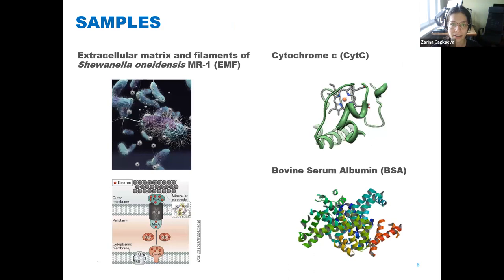So we had three different biological samples. The first one was the extracellular matrix and filaments of the electrogenic bacteria Shewanella oneidensis. Here on the left you can see this bacteria. These threads are the extracellular matrix and filaments. These are the conductive ones. While this matrix consists of membrane and different proteins, usually cytochrome-type proteins, we also chose cytochrome-type protein as our second object for investigation because it resembles in structure the cytochromes of the extracellular matrix.